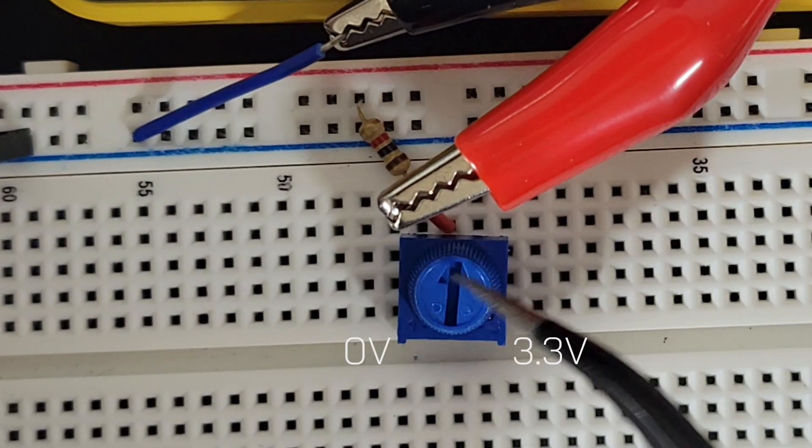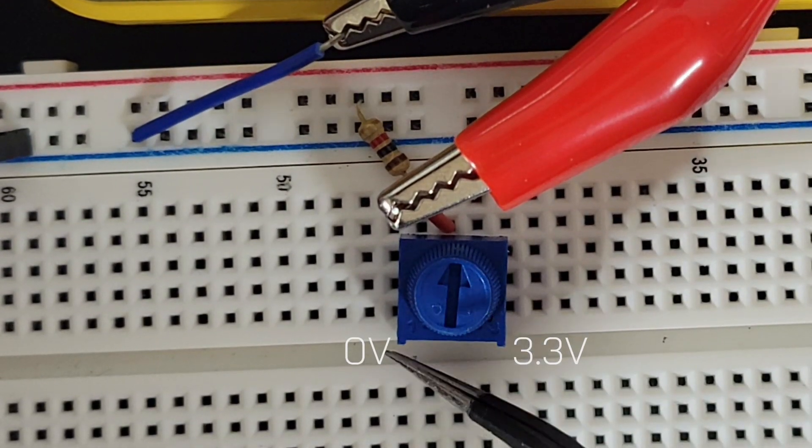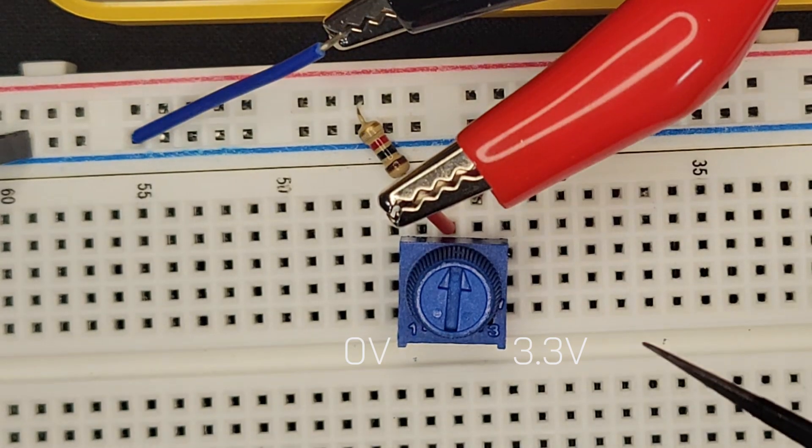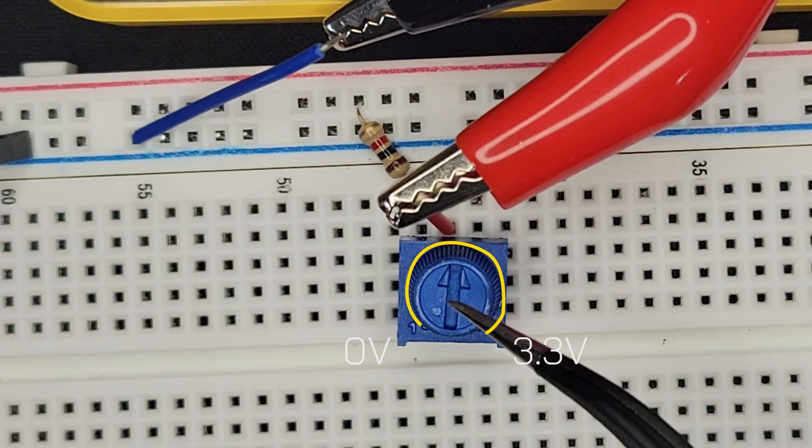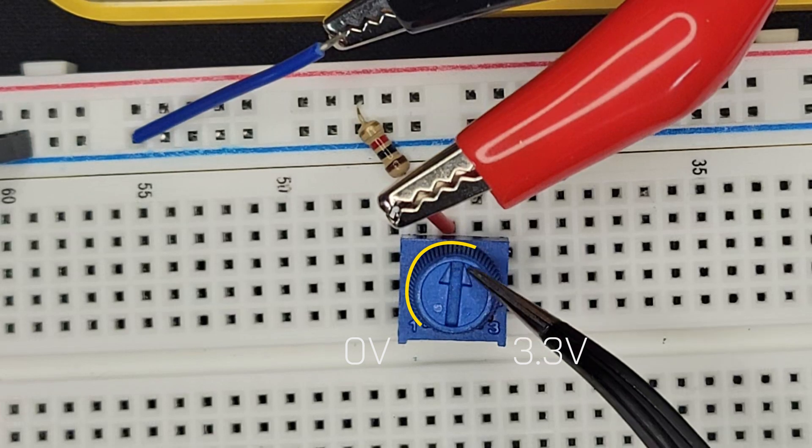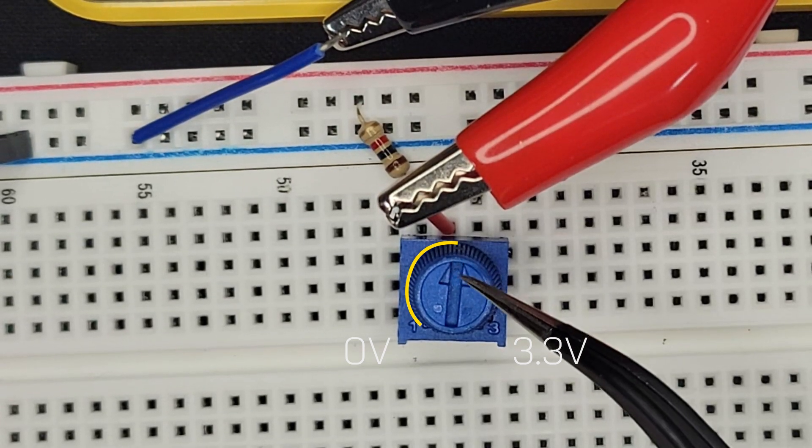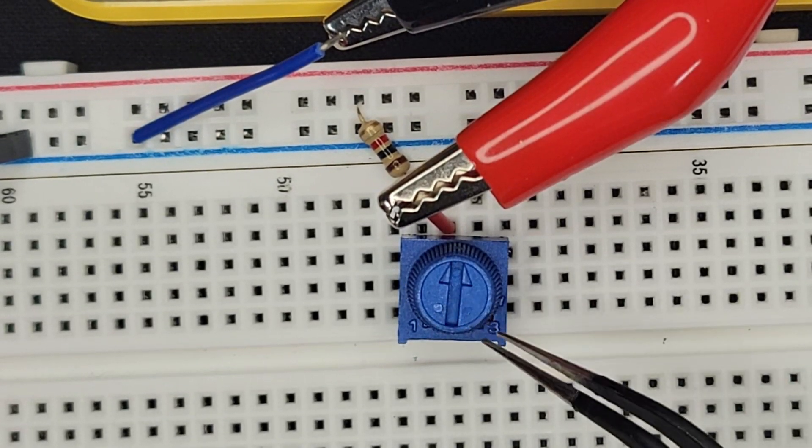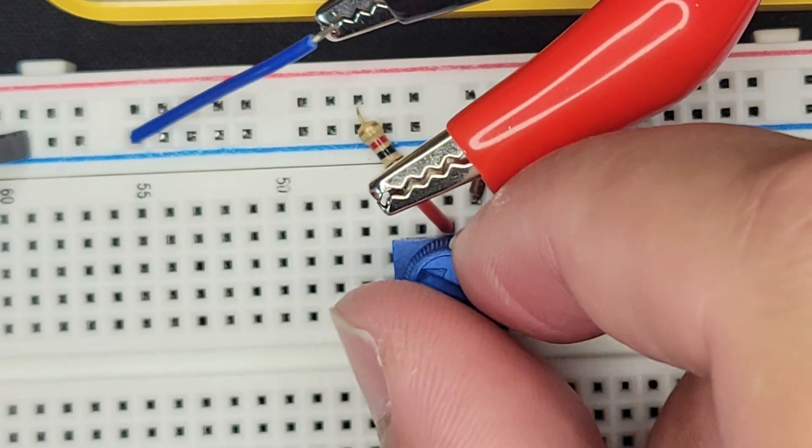So interestingly, we can see the arrow is almost directly in the middle, because if we have zero volts here and 3.3 volts here, it makes sense that this is now acting somewhat as a percentage. It's acting somewhat as a meter, like this is around 50%. And 50% of 3.3 volts is 1.5. So this is a really interesting way to control this stuff.